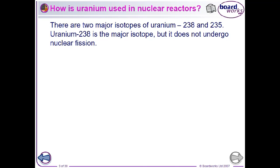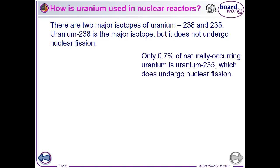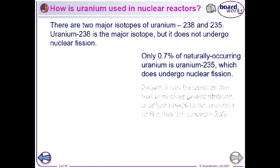There are two major isotopes of uranium that we find in nature, 238 and 235. Now, uranium-238 is the normal one, but it doesn't undergo nuclear fission. About 0.7% of naturally occurring uranium is uranium-235, which will undergo nuclear fission.